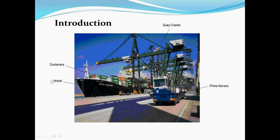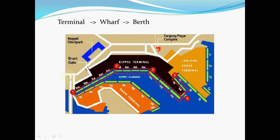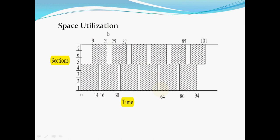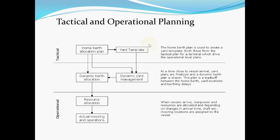Vessels are used to ship containers all over the world, and they need to transship these containers at the terminal. Here we have an example of a container terminal. Each terminal would contain several wharves, and each wharf would contain several berths. In this graph, the shaded area represents the time in which a ship is moored at the berth, and the white blocks represent the time when the berth is not being utilized.